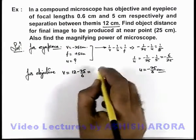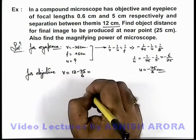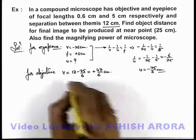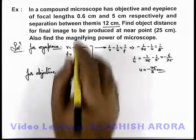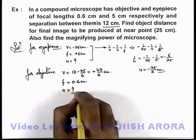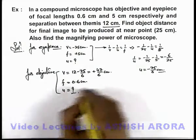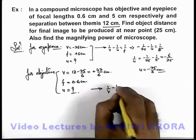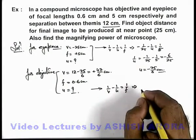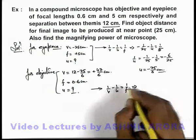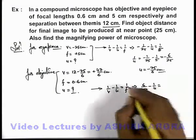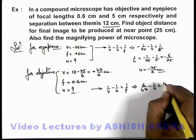This can be written as 72 minus 25, giving plus 47/6 centimeters. The focal length of the objective lens is given as 0.6 centimeters. Now we are required to find the object distance. Using the lens formula, 1/v minus 1/u equals 1/f, substituting the values gives us: 6/47 minus 1/u equals 1/f, which can be written as 10/6.